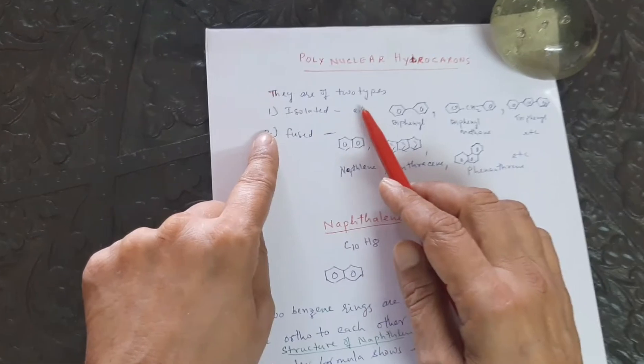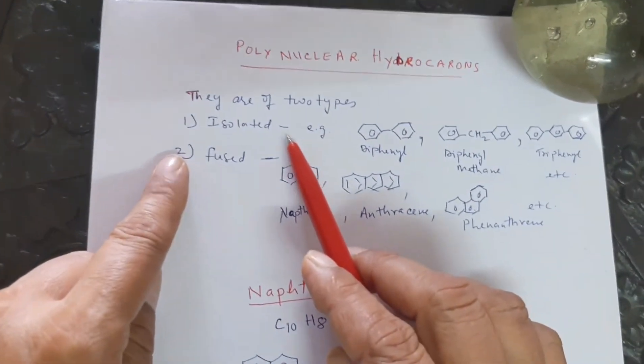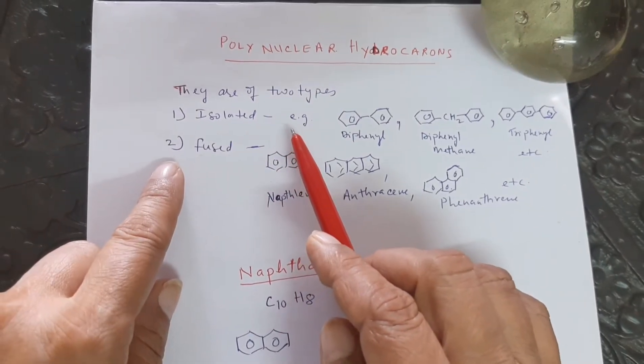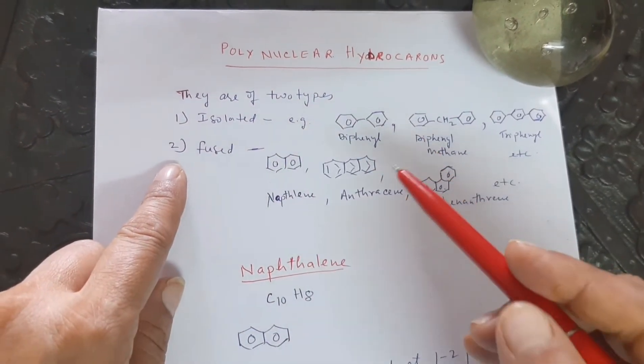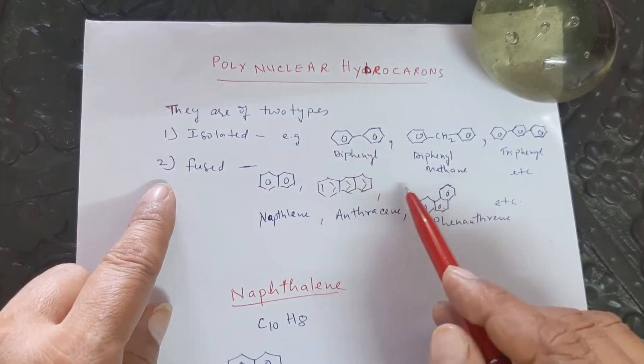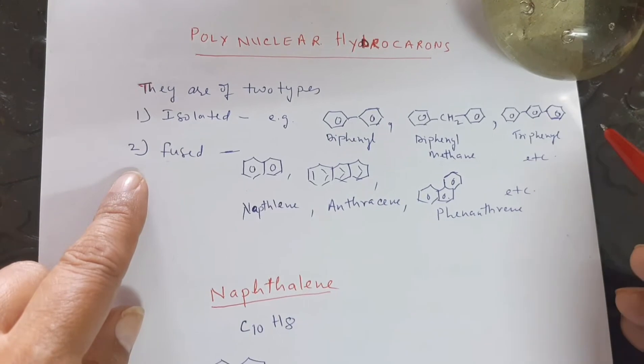They are of 2 types, isolated and fused polynuclear hydrocarbons. In isolated polynuclear hydrocarbons, the examples are diphenyl, diphenyl methane, triphenyl, etc.